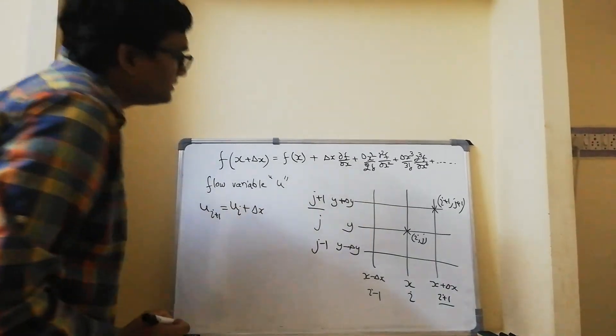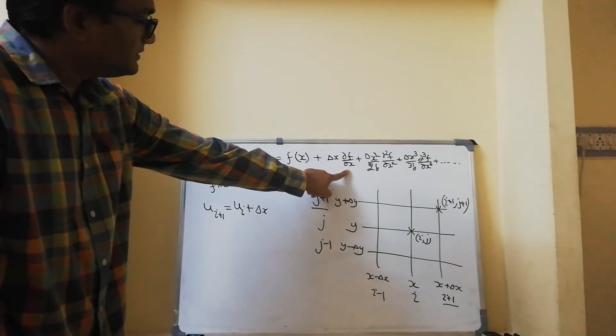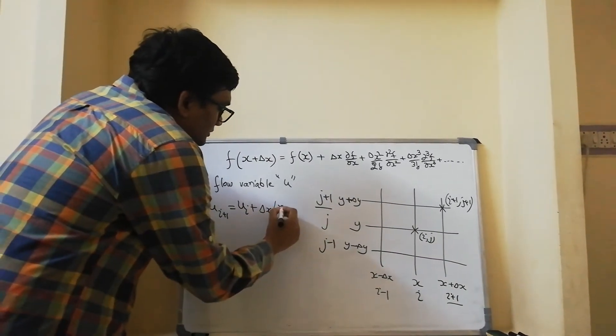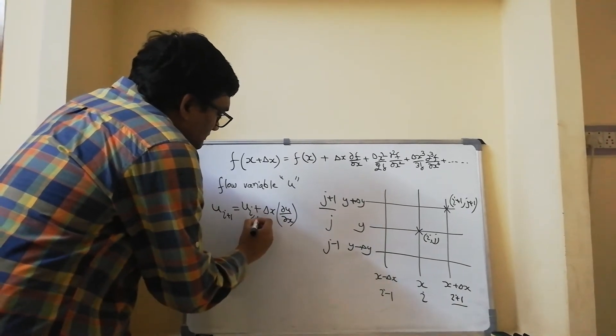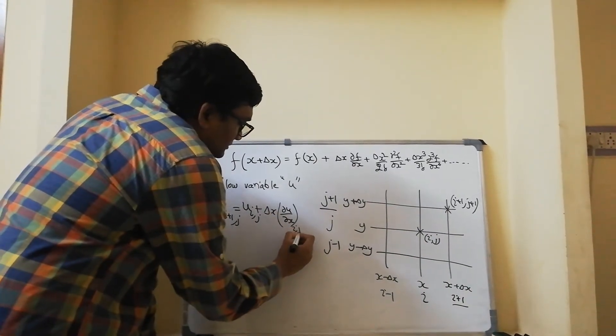If you recollect, it is the derivative at location x. So I can write dou u by dou x at location, let me write i plus 1 comma j, i comma j, and this is at i comma j location.